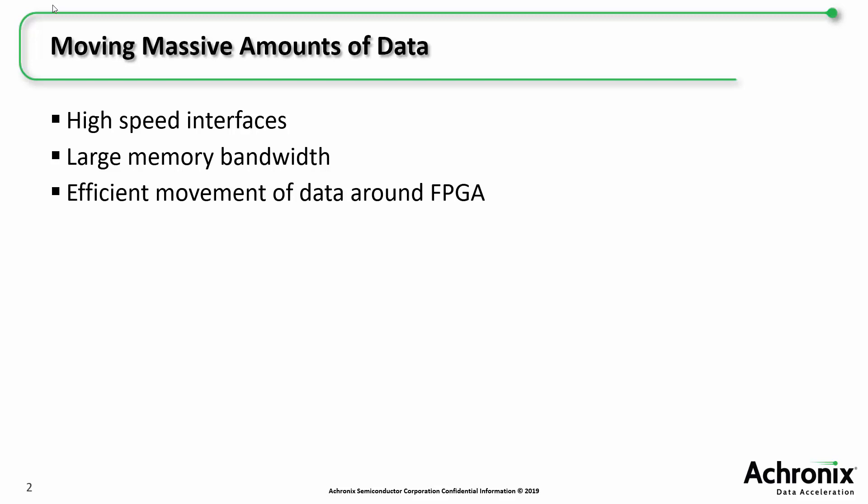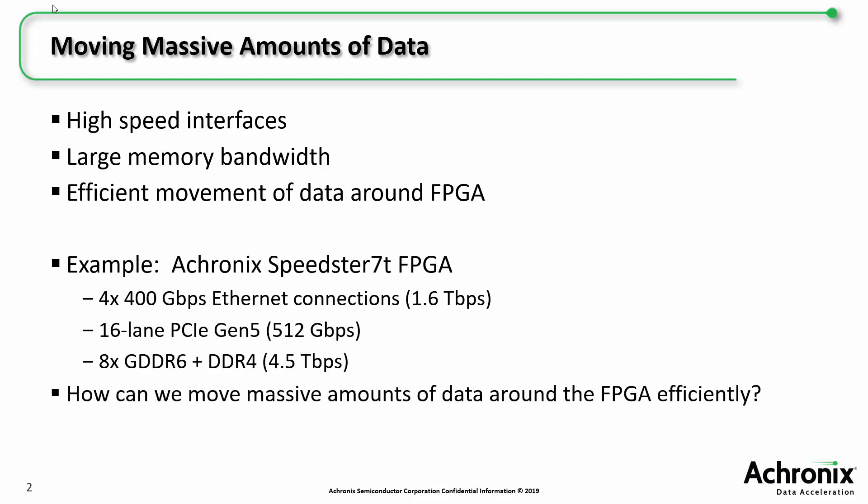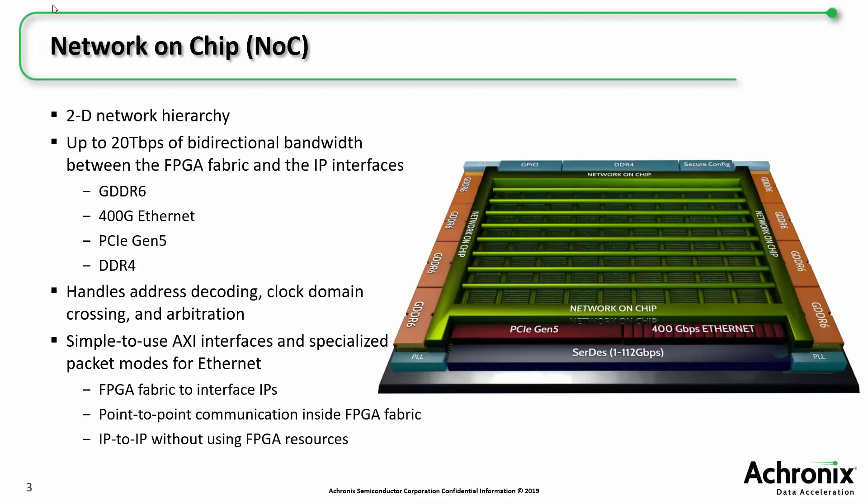Modern systems using FPGAs now require high-speed interfaces and large memory bandwidth, making the efficient movement of data in and around an FPGA of paramount importance. For example, Achronix's Speedster 7T1500 device has four 400-gig Ethernet MACs that can move up to 1.6 terabits per second, a 16-lane PCIe Gen 5 with up to 512 gigabits per second, and eight GDDR6 controllers plus DDR4 that can produce up to 4.5 terabits per second.